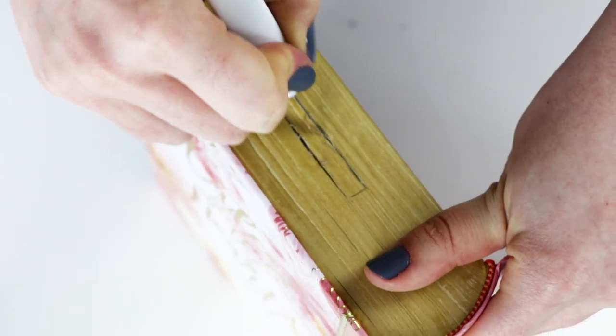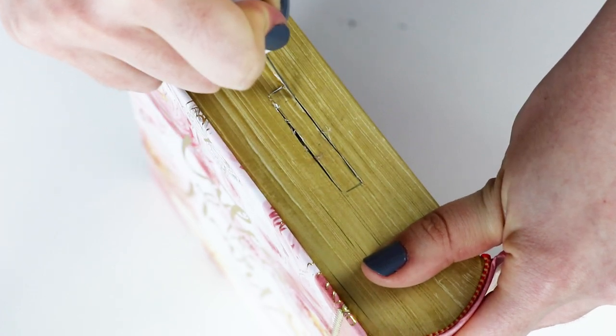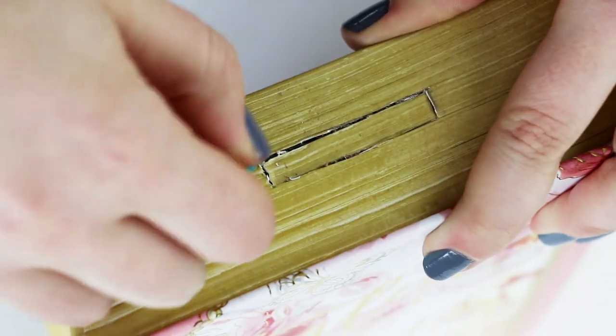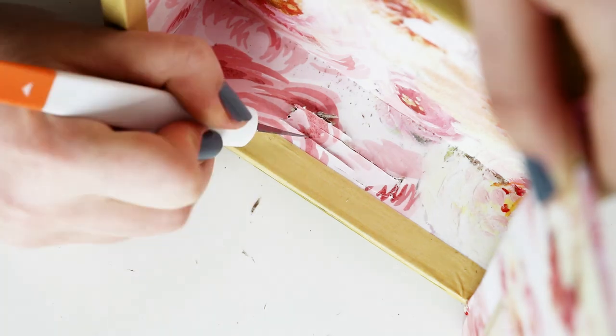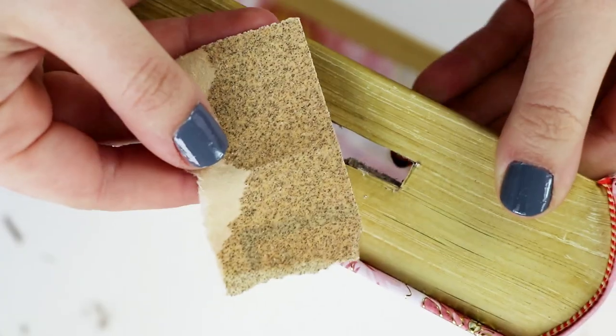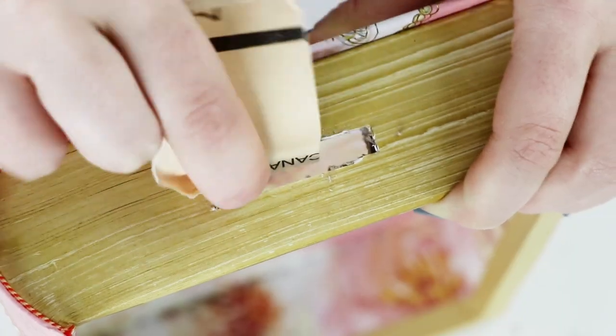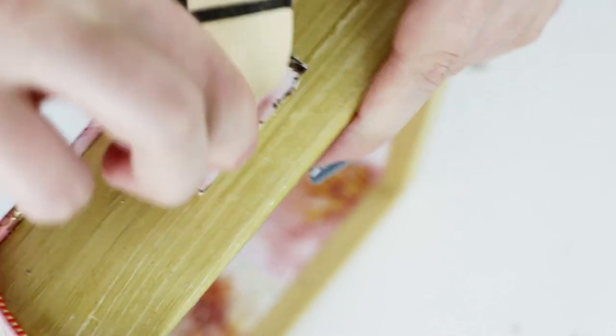The cardboard on this box was a little thicker than I expected, so I also ended up using a thumbtack to poke holes, which I then connected using my craft knife. So once you've got the rectangle cut out, you can use a bit of sandpaper to smooth it down.